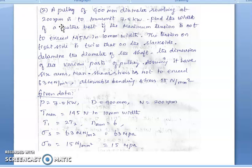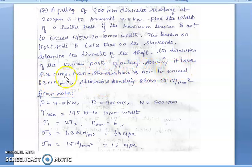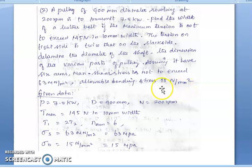Next problem: a pulley of 900 mm diameter revolving at 200 rpm is to transmit 7.5 kW. Find the width of the leather belt if the maximum tension is not to exceed 145 N per 10 mm width. The tension on the tight side is twice that on the slack side. Determine the shaft diameter and dimensions of the pulley assuming 6 arms. Maximum shear stress must not exceed 63 MPa and allowable bending stress is 50 N/mm².